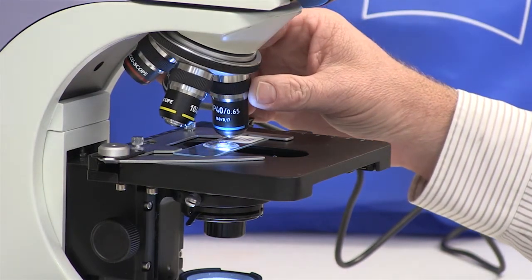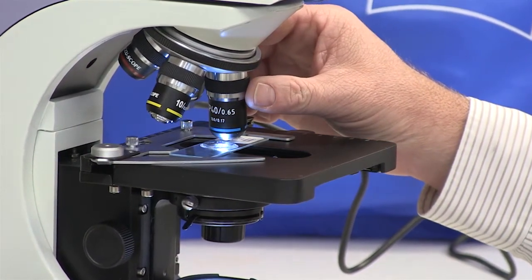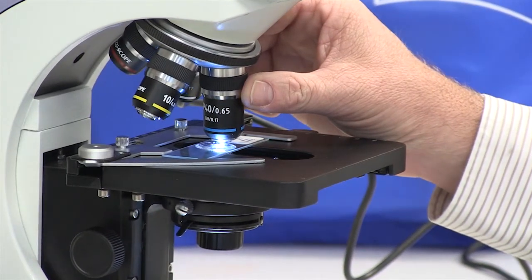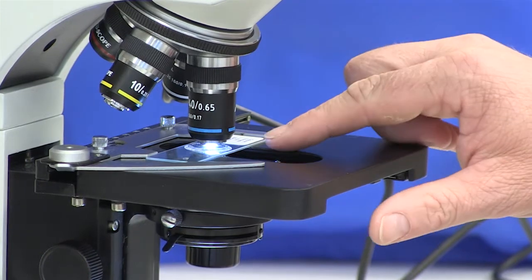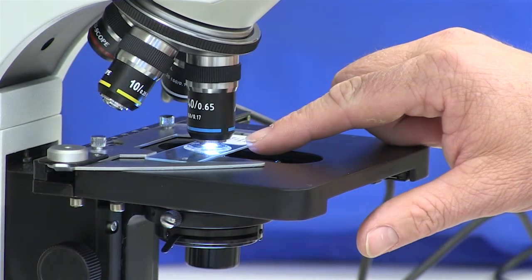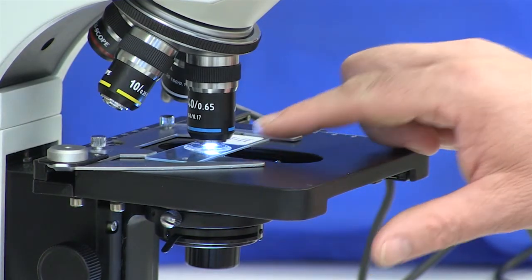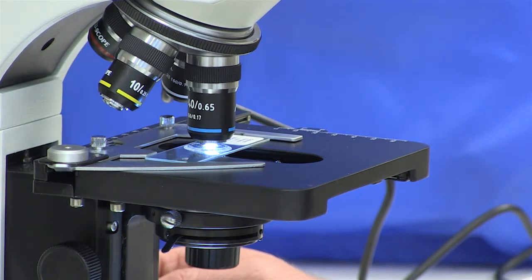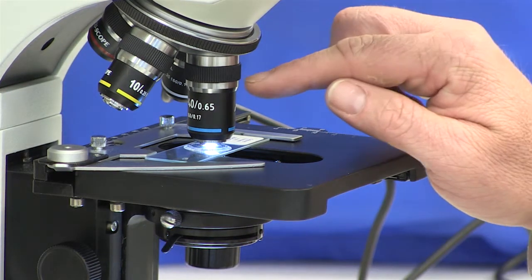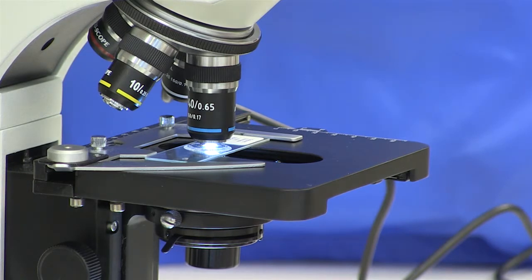You'll see that there's going to be very little space, what we call a working distance, between the high power objective and the specimen—just a very small distance. Therefore, we only want to use the fine adjustment knob to make adjustments to our working distance when we have the high power objective in place.